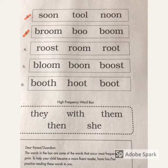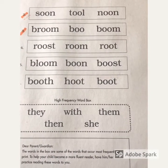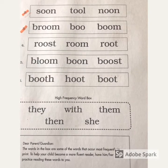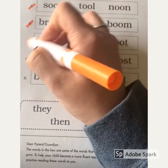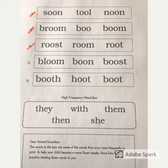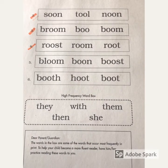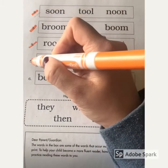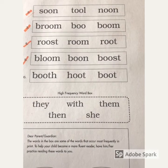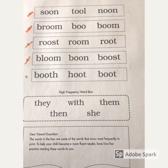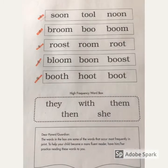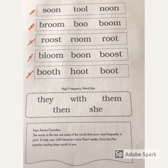Number four — circle the word room: r-oo-m, room. Number five — circle the word bloom: bl-oo-m, bloom. Number six — circle the word boot: b-oo-t, boot. There we go, we did numbers two through six!